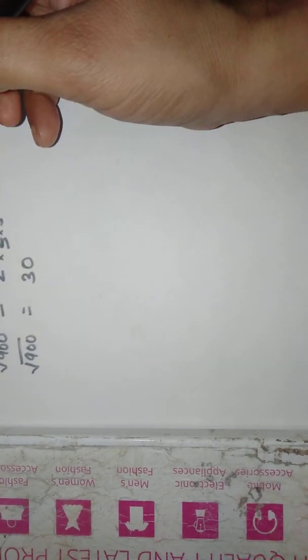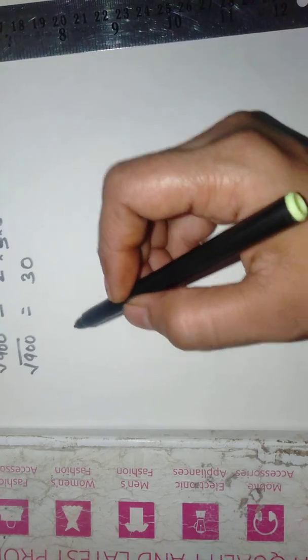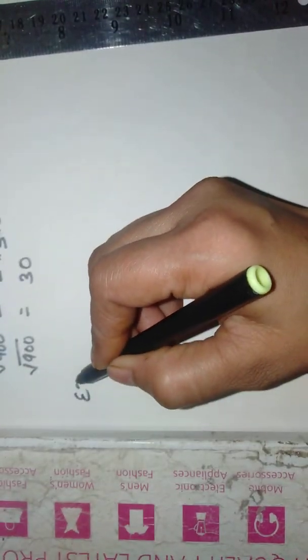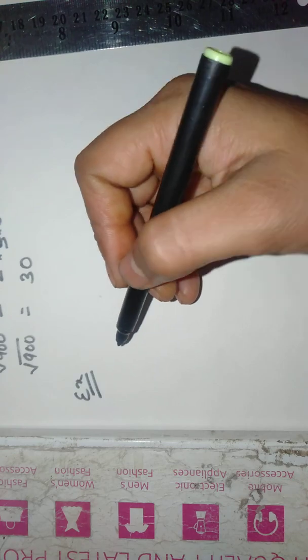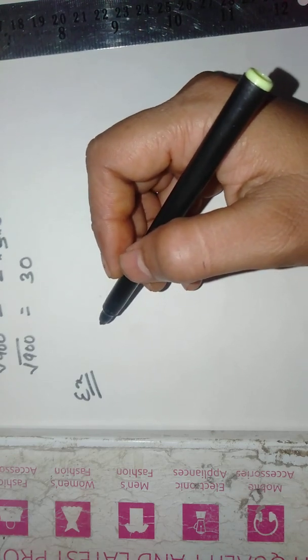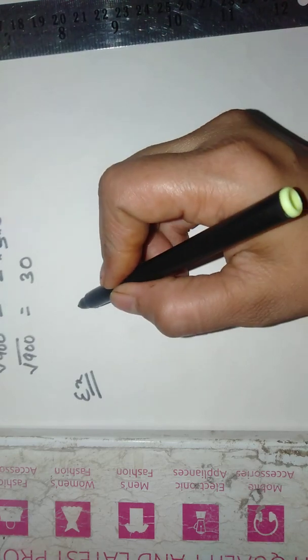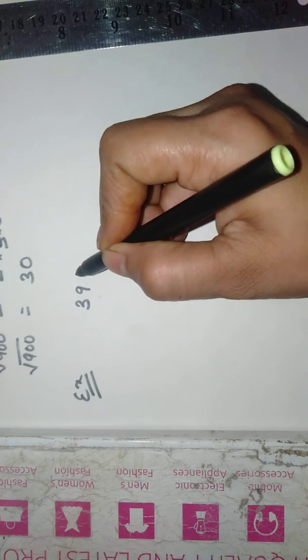It may be one factor or two factors. Now another example where we have to find out by what number we should be divided so that the number becomes a perfect square. Let us take an example of 396.